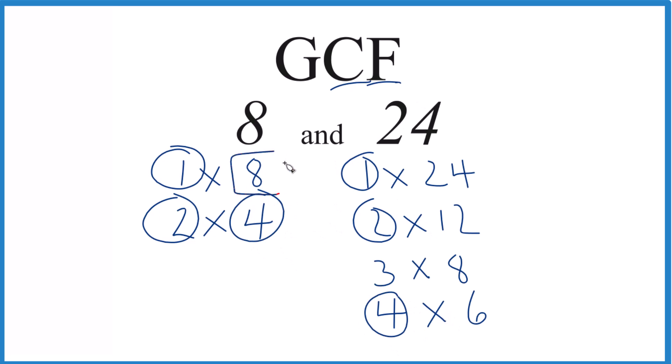And then finally 8, that's the greatest one. So 8 is the greatest common factor between 8 and 24. So answer to our question, the GCF for 8 and 24, that's just 8.